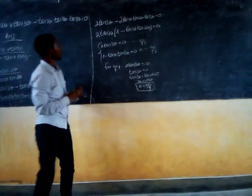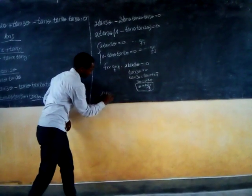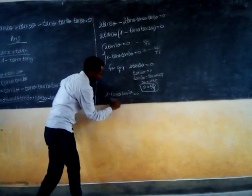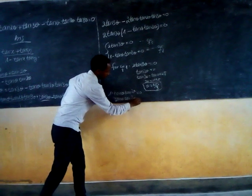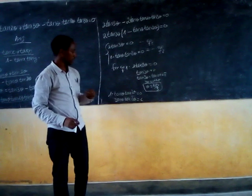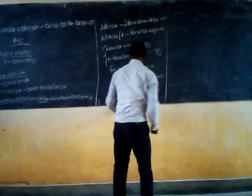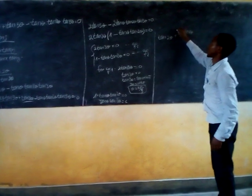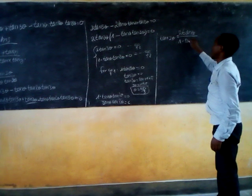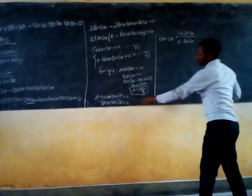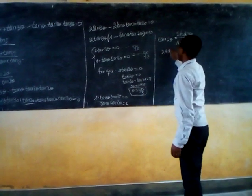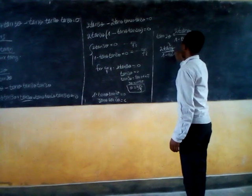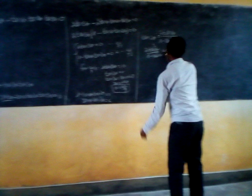This is the solution from equation 1. Now for equation number 2: 1 minus tan(θ) times tan(2θ) equals zero. Using tan(2θ) equals 2tan(θ) divided by 1 minus tan²(θ), this is the equation we need.